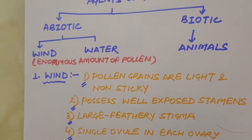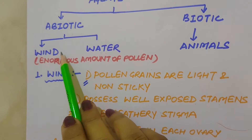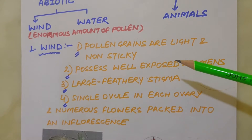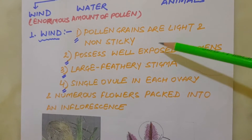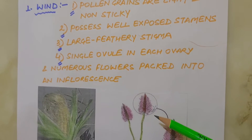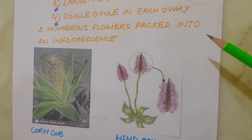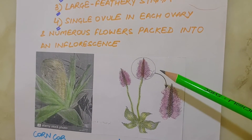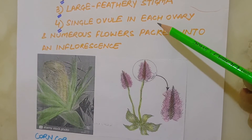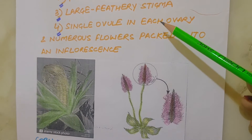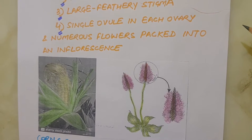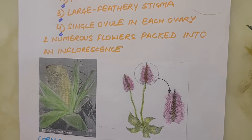Pollination by wind is more common among abiotic pollinators. Some adaptations related to wind pollination are: pollen grains are light and non-sticky so they can be transported in wind currents; flowers possess well-exposed stamens so that pollen is easily dispersed into wind currents; and large, often feathery stigma to easily trap airborne pollen grains. Wind-pollinated flowers often have a single ovule in each ovary and numerous flowers packed into an inflorescence, so that maximum nutrition can be provided.